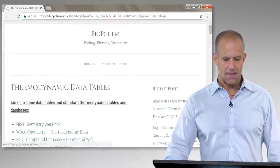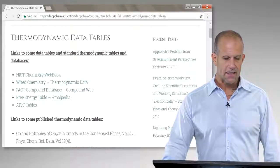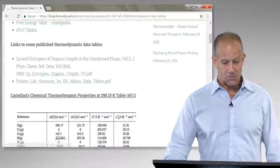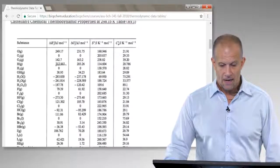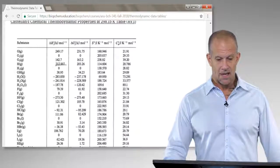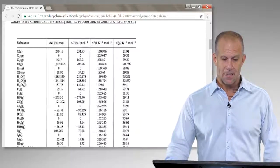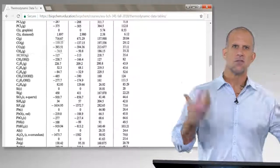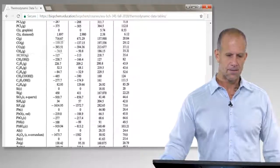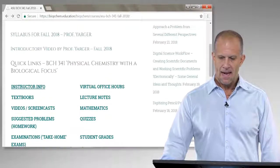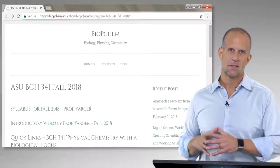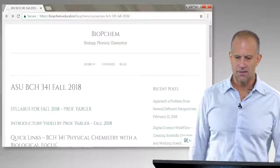But for example, the thermodynamic data table here gives links to a lot of the common data tables you would use, as well as just some image versions of some common thermodynamic thermochemical tables. So just some useful things students can go to when they're working problems for BCH 341, and hopefully some useful blog tips as well when you're working either the quizzes or exams.